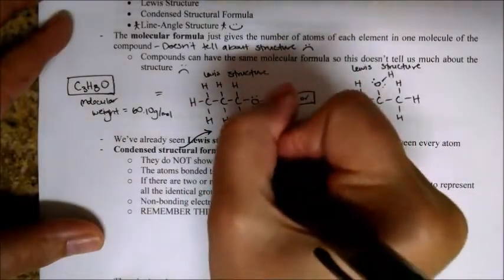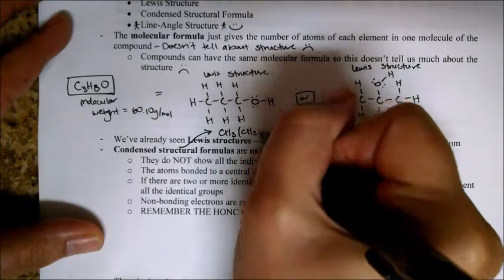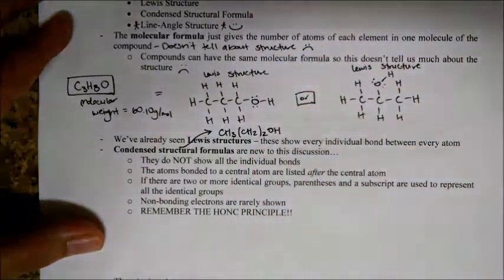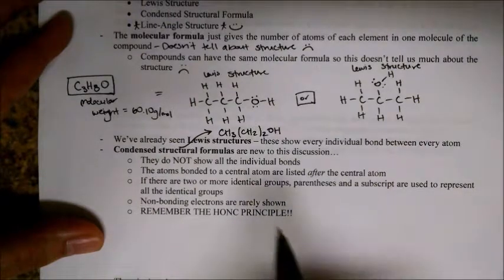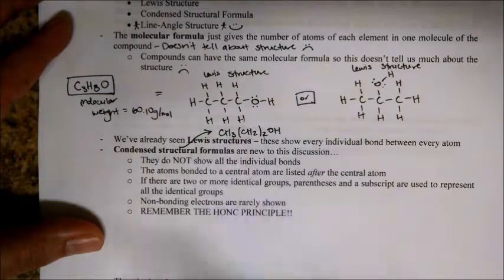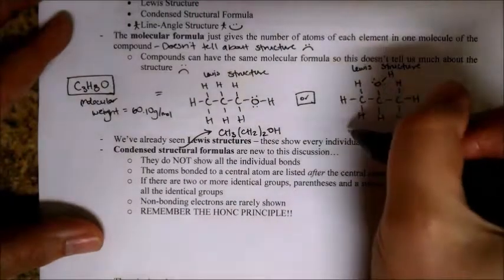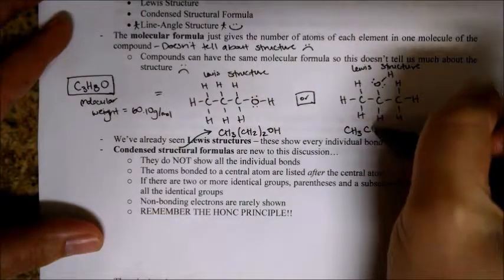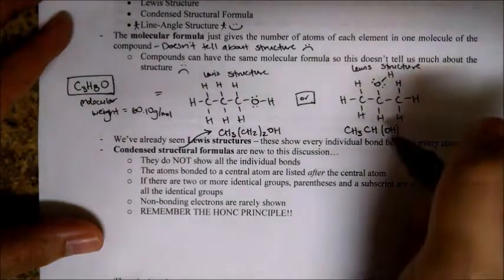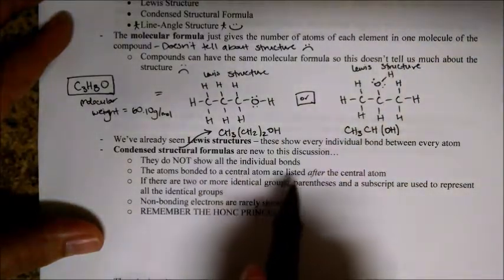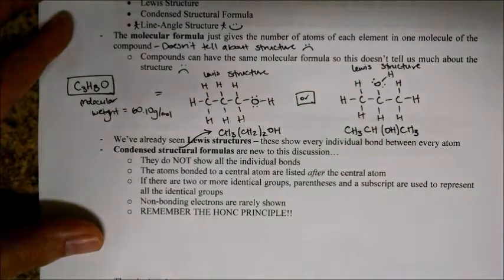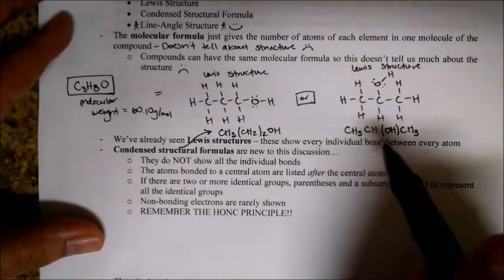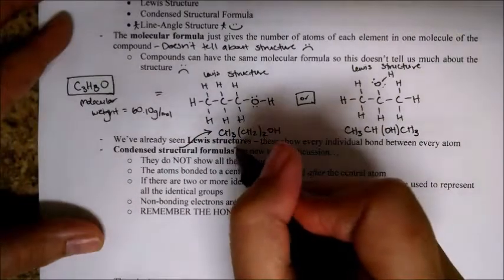For the condensed structural formula of propanol, it would be CH3, then two CH2s denoted with parentheses, then OH. Notice we don't draw the lone pairs on the OH. For isopropanol, the condensed structural formula has a CH with an OH in parentheses, and the CH3 group also bound to that carbon is listed after — in parentheses — because atoms bonded to a central atom are listed after the central atom. That's how we designate multiple things bound to a central atom.